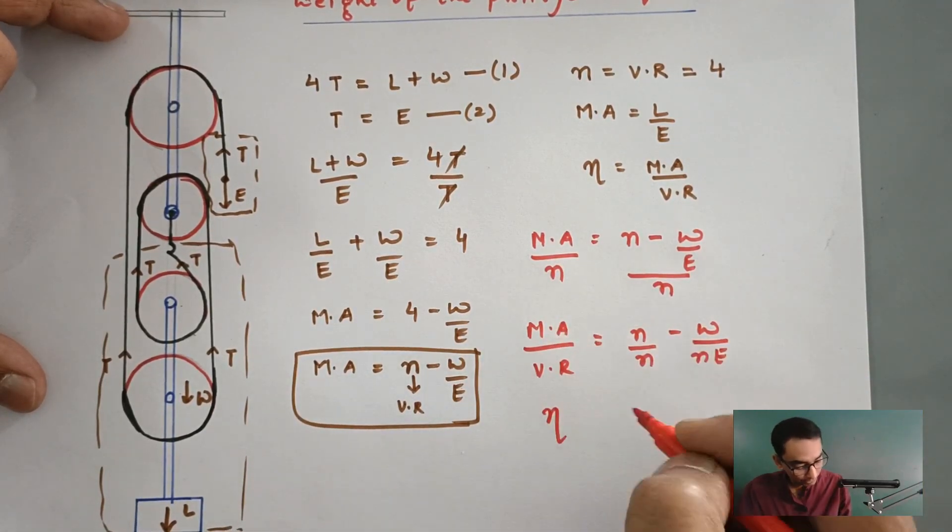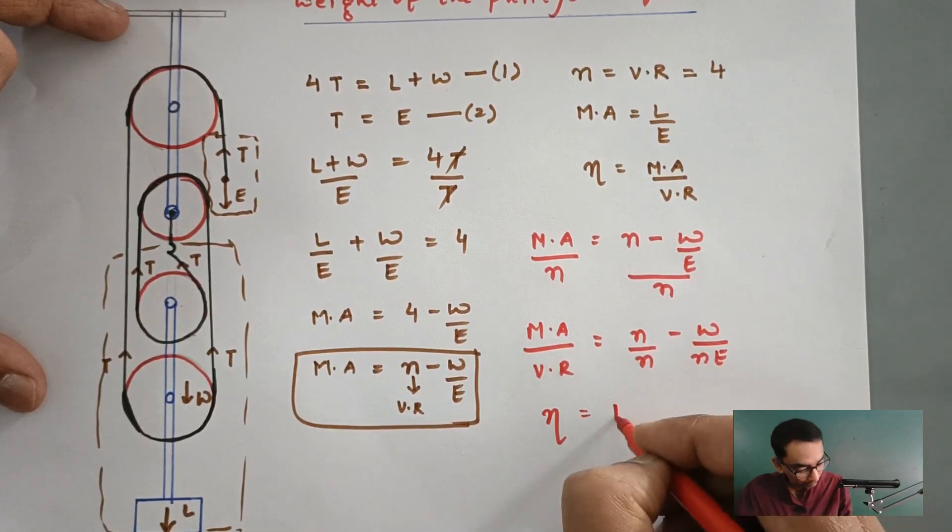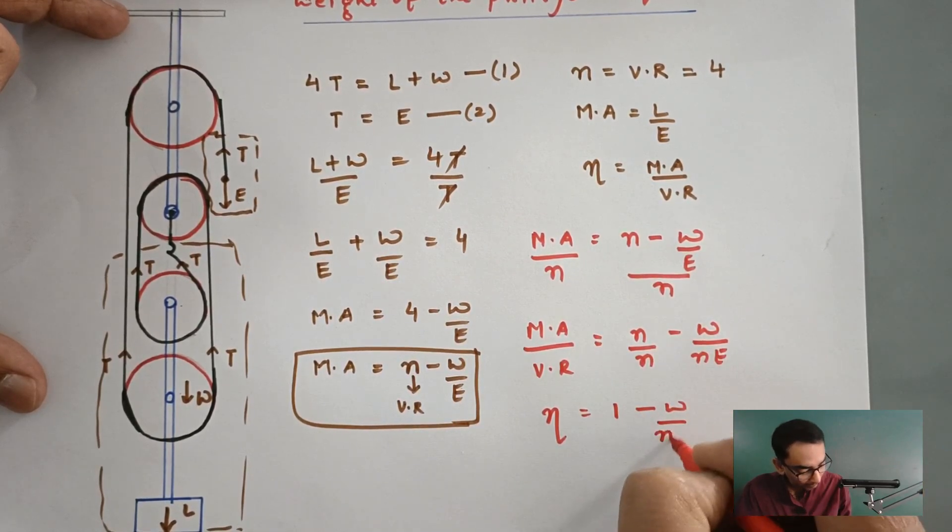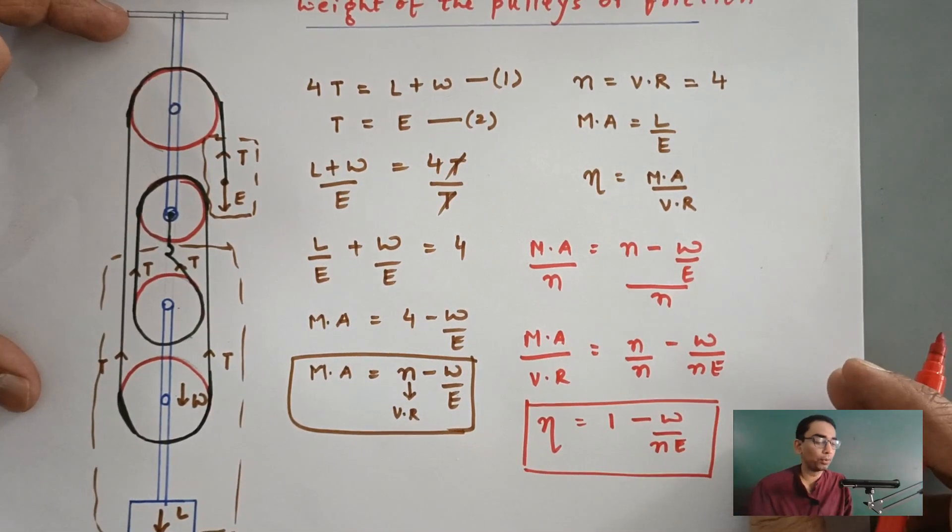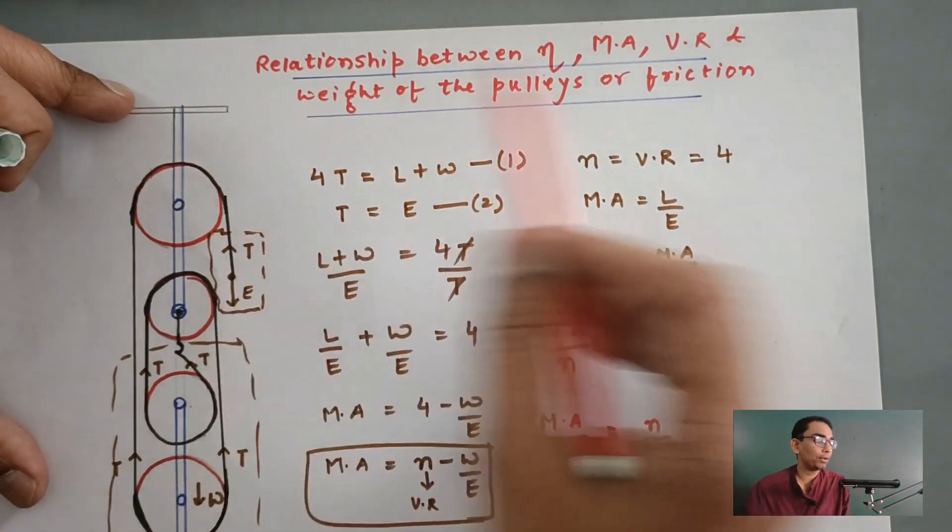Then, this is the efficiency. So, efficiency is equal to n by n, that is 1 minus W by n times E. This is the answer to our problem. This is the proof. This is the relationship between...